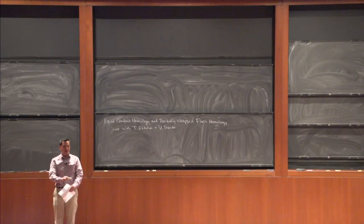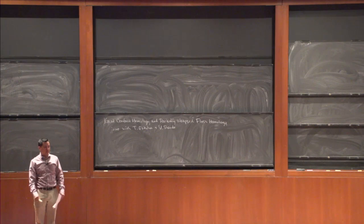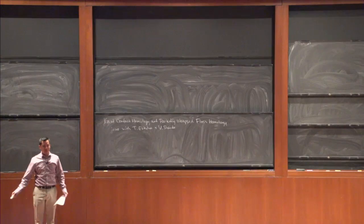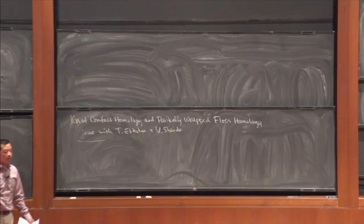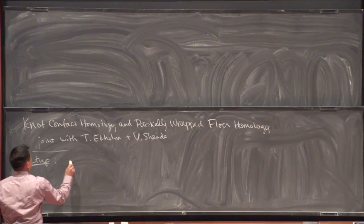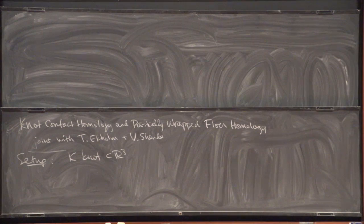Near the end, I want to try to propose a way to interpret it using a version of partially wrapped Floer homology that seems to make the picture a lot clearer. This is joint work with Tobias Ekholm and Vivek Shende. So the setup is as follows: I'm going to start with a knot inside of R³, just a smooth knot, and then we'll push this into the symplectic or contact world.